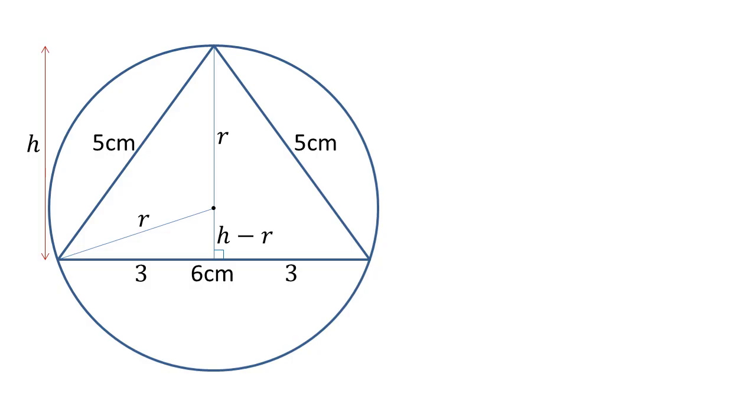Now we've got these, we can start to form some equations. To start with, let's look at the right-hand half of our isosceles triangle. So it's a right-angled triangle with a hypotenuse of 5, we've got a height of H and we've got the base of 3.